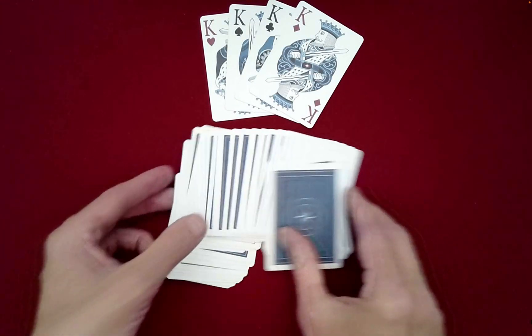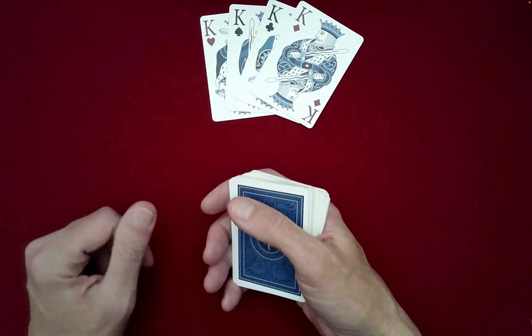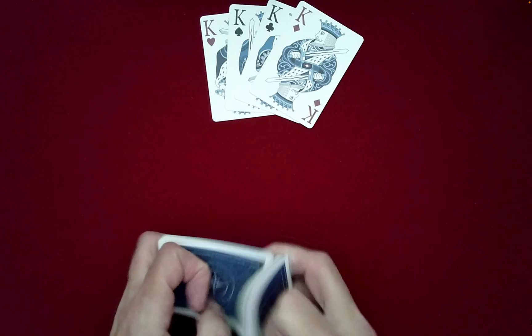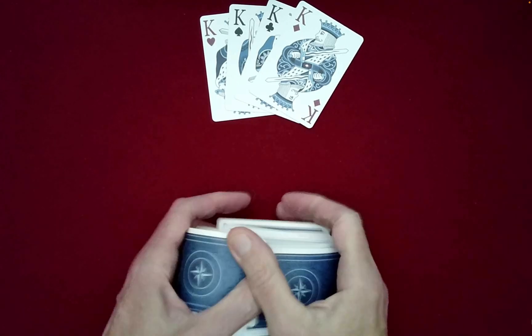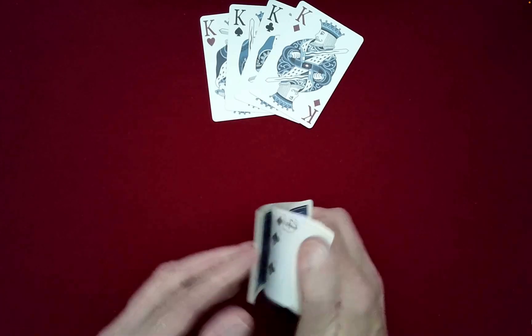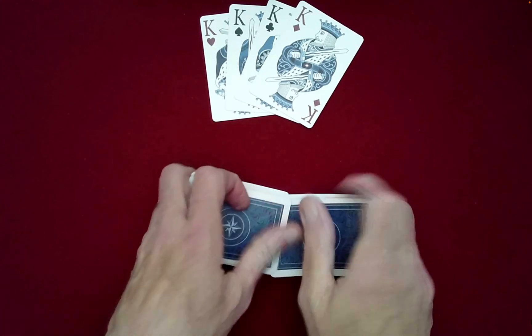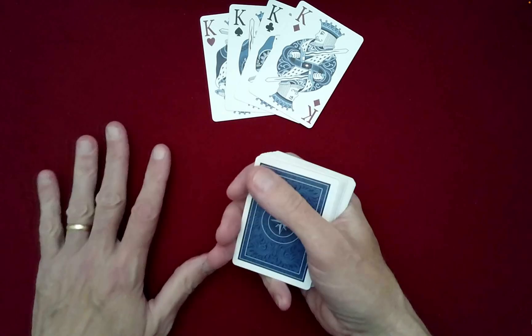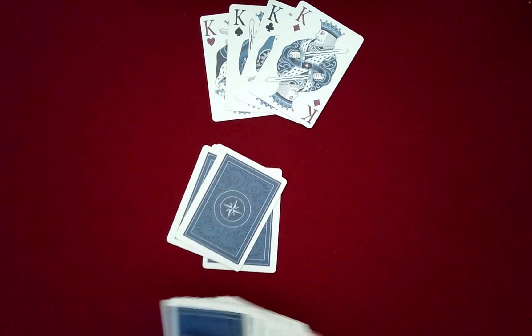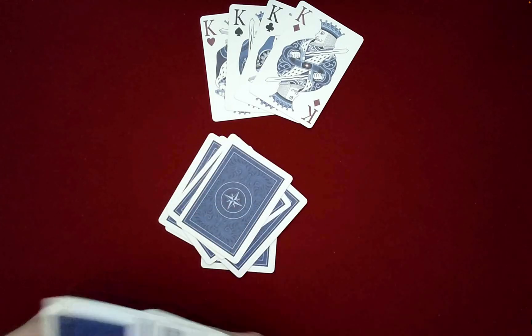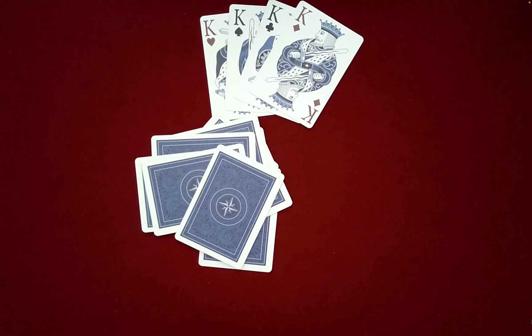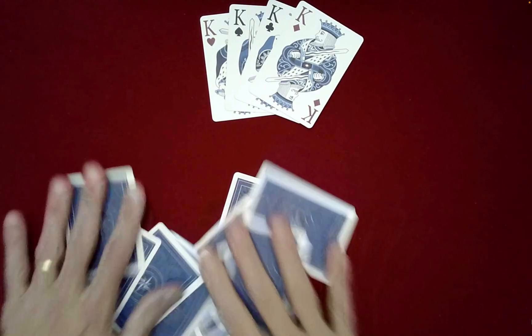And then as the performer what I need to do is choose twelve random cards. Now of course you didn't see whether the deck was mixed or not, so let's go ahead and mix it just to show you that these are not in any particular order. So twelve random cards, counting them out: one, two, three, four, five, six, seven, eight, nine, ten, eleven, twelve. Very good.